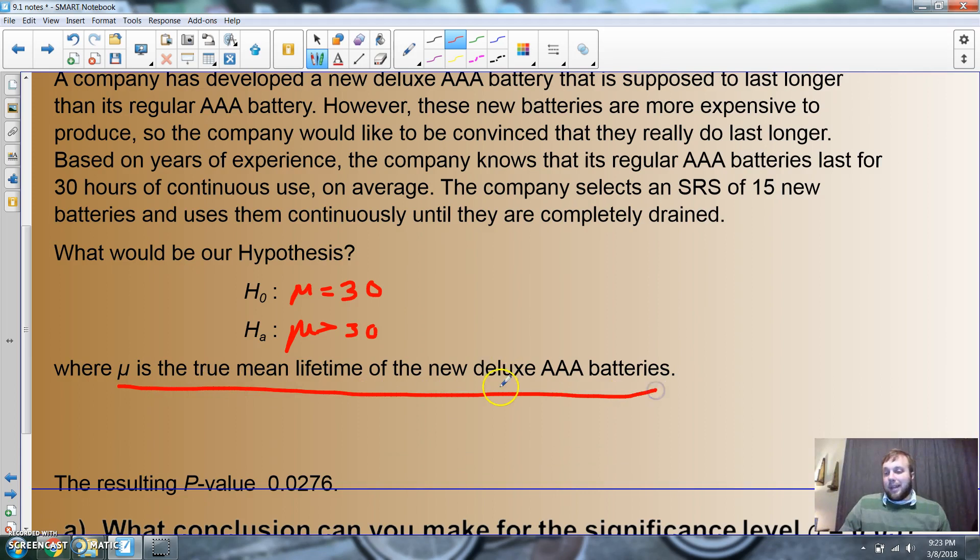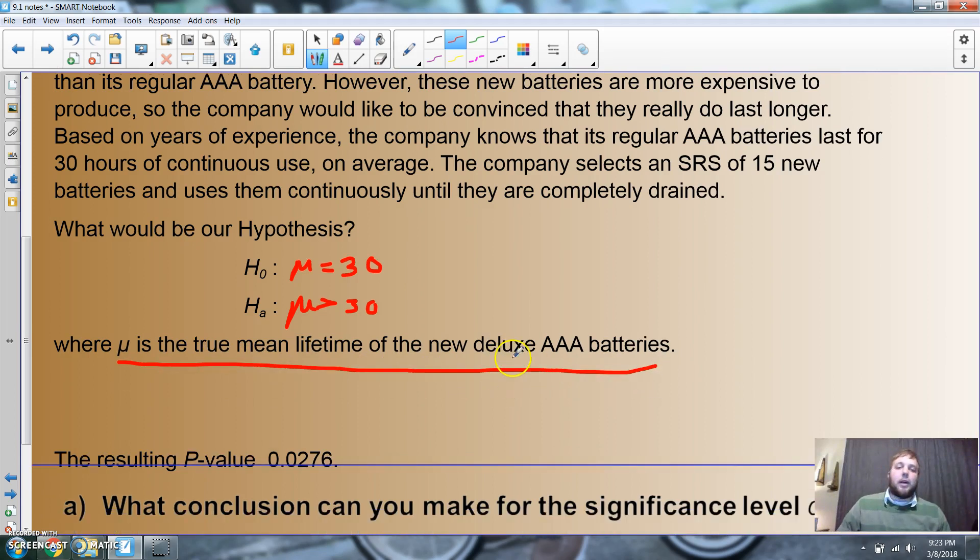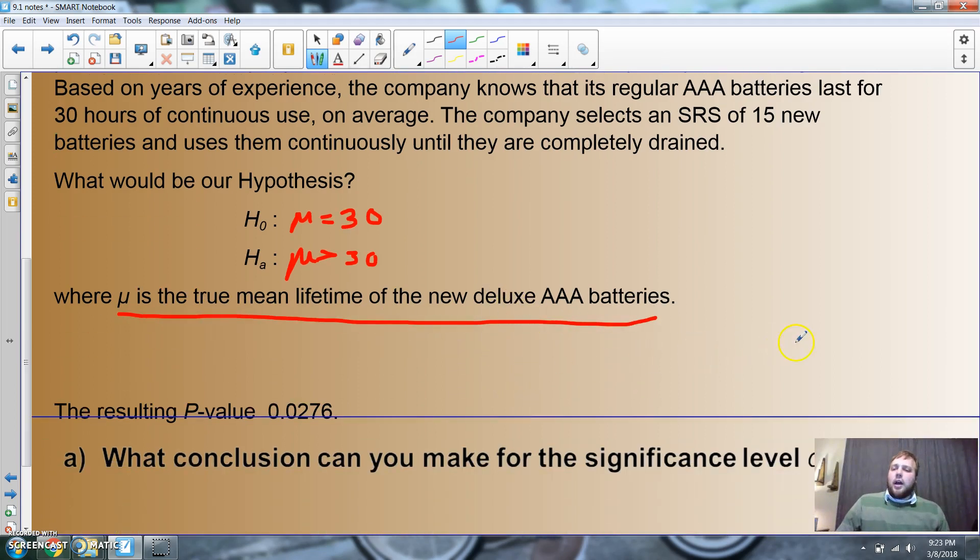Here's the situation. I'm going to draw a normal curve here. We are going to assume that the mean should be at 30.